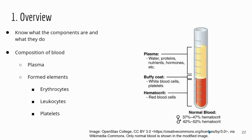The blood has two main components. The first component is plasma, which is the liquid part of blood. Plasma has mostly water, but there are also dissolved components such as nutrients like glucose, electrolytes, and proteins — transport proteins like albumin, immune proteins, and hormones. These are transported by blood throughout the body.